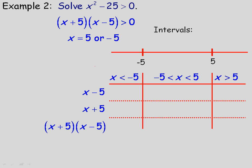We choose a test number in each interval. For x less than negative 5, choose negative 8. Negative 8 minus 5 is negative 13, so the factor x minus 5 is negative. Negative 8 plus 5 is negative 3, so the factor x plus 5 is also negative. The product of two negatives is positive, so we record positive for that interval.